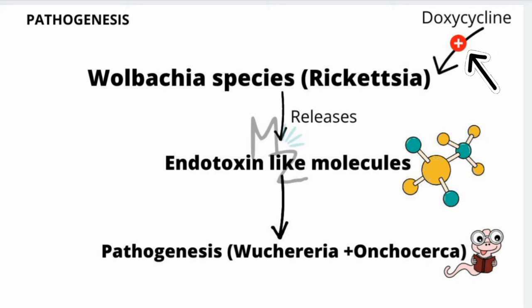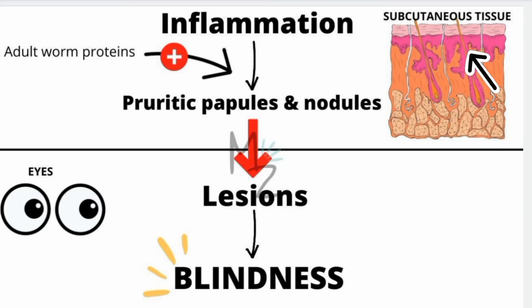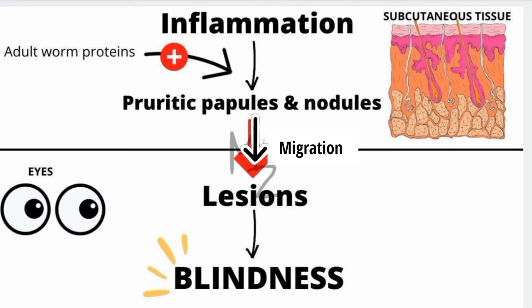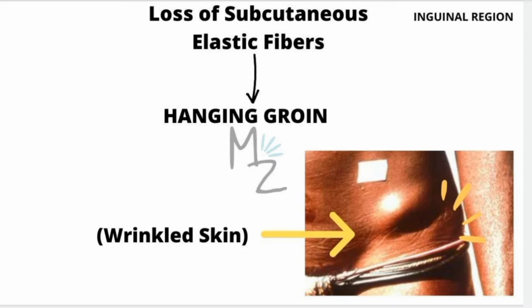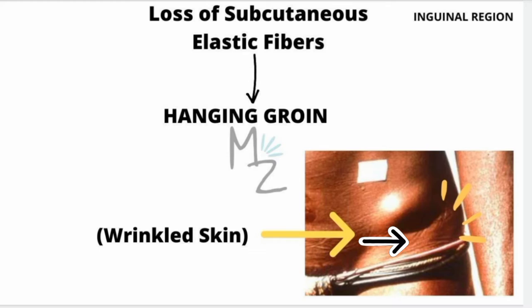Inflammation occurs in the subcutaneous tissue, and pruritic papules and nodules form in response to adult worm proteins. Microfilariae migrate through subcutaneous tissue, ultimately concentrating in the eyes, where they cause lesions that can lead to blindness. In the inguinal region, loss of subcutaneous elastic fibers leads to wrinkled skin, which is called hanging groin, as visible in the picture.